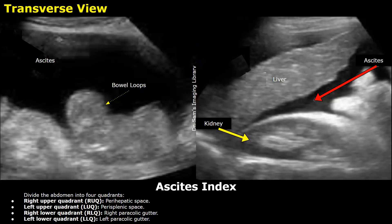We can start by dividing the abdomen into four quadrants. The probe placement and the quadrants are similar to a FAST scan. The first one is the right upper quadrant, which is the perihepatic space — the space around the liver. The second quadrant is the left upper quadrant, the perisplenic space — the space around the spleen. The third and fourth quadrants will be the right and left lower quadrants. This division is similar to the method we use in measuring amniotic fluid index in obstetric ultrasound.